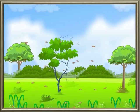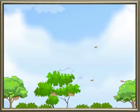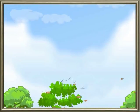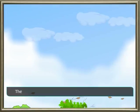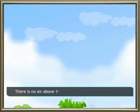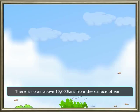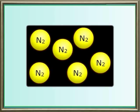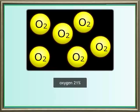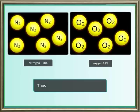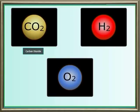Air is a mixture of gases surrounding the earth, also called the atmosphere. The air becomes thinner as we go up in the sky, and there is no air above 10,000 kilometers from the surface of the earth. Air is mainly composed of nitrogen at 78% and oxygen at 21%, so 99% of air has these two gases. The other gases present in the air are carbon dioxide, hydrogen, water vapors, and many more.